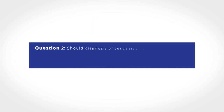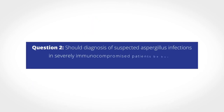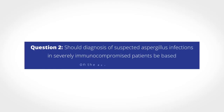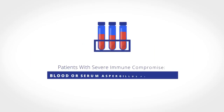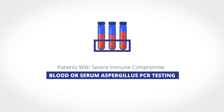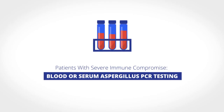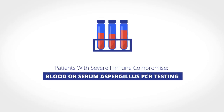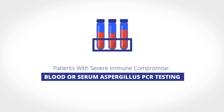Question 2 asks: Should diagnosis of suspected aspergillus infections in severely immunocompromised patients be based on the application of polymerase chain reaction? In patients with severe immune compromise, such as those with hematologic malignancy or recipients of hematologic stem cell or solid organ transplants who are suspected of having invasive pulmonary aspergillosis, the panel recommends the use of blood or serum aspergillus polymerase chain reaction testing.